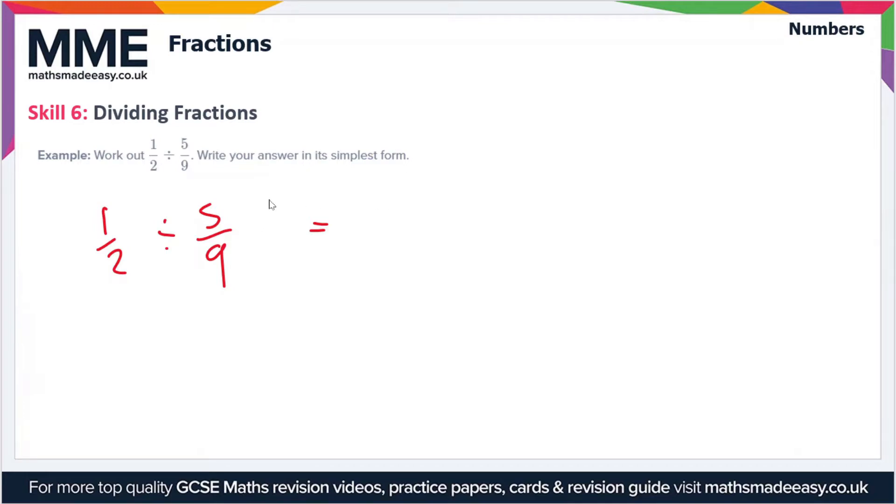What does that mean? Well, we keep the first fraction the same, so that stays as one-half. We change the division to a multiplication sign, and we flip the second fraction. When we flip it, the numerator becomes the denominator and the denominator becomes the numerator.